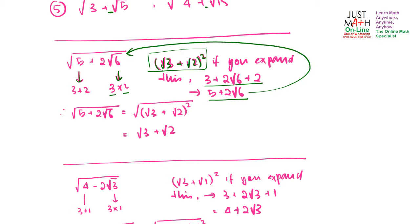So this is the same as the original. That means 5 plus 2 root 6 is actually equal to (root 3 plus root 2) squared. Remove the square and the root, and you have root 3 plus root 2. That is your simplified answer.